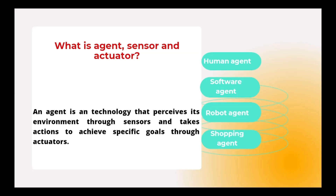For a software agent example: when a key is pressed on the keyboard, that is the sensor — it senses the input — and the display is the actuator. For a robot agent, consider a self-driving car: the camera senses traffic and road conditions as input data, and the car performs actions like speed increase, slow down, or braking with the help of actuators.